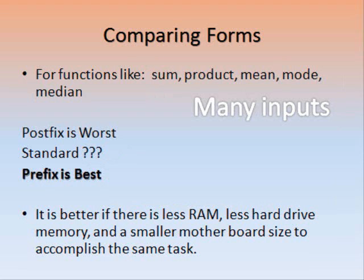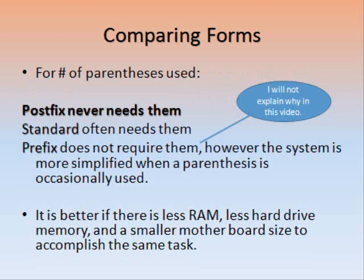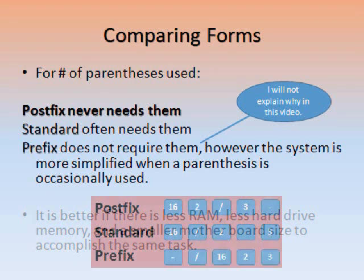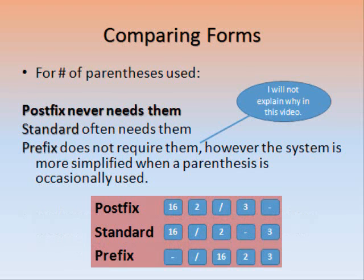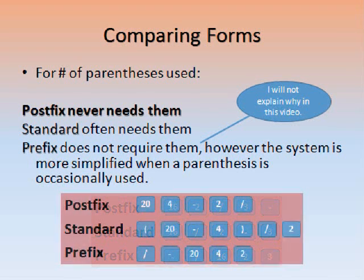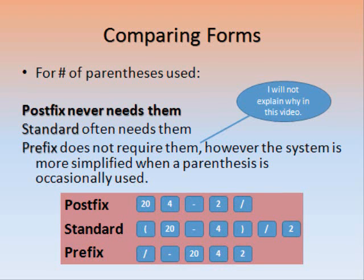For functions like sum, product, mean, mode, and median — which can have an unlimited number of inputs — prefix form is the best. Postfix form uses a lot of RAM for functions with many inputs, and there is not really a middle position, which is why the standard form is unknown for these. For the number of parentheses used: postfix form never needs them, standard form often needs them, and prefix form does not require parentheses, though the system is more simplified when a parenthesis is occasionally used. In this example, the standard form requires two extra parentheses.